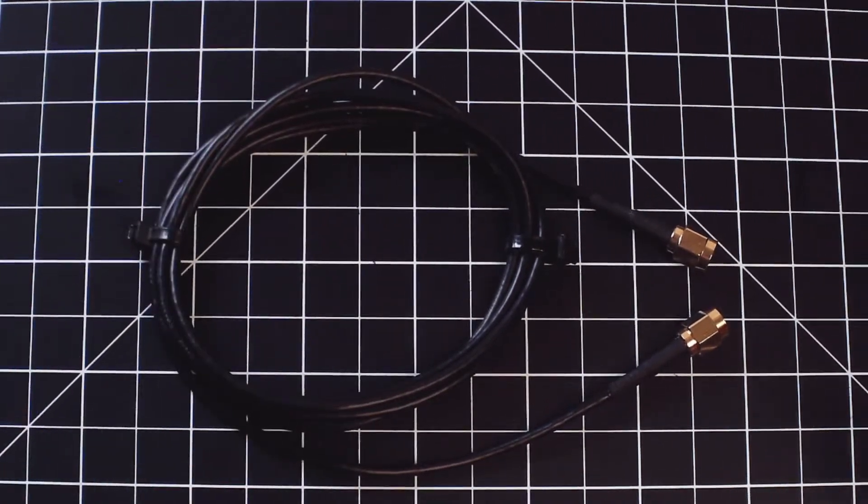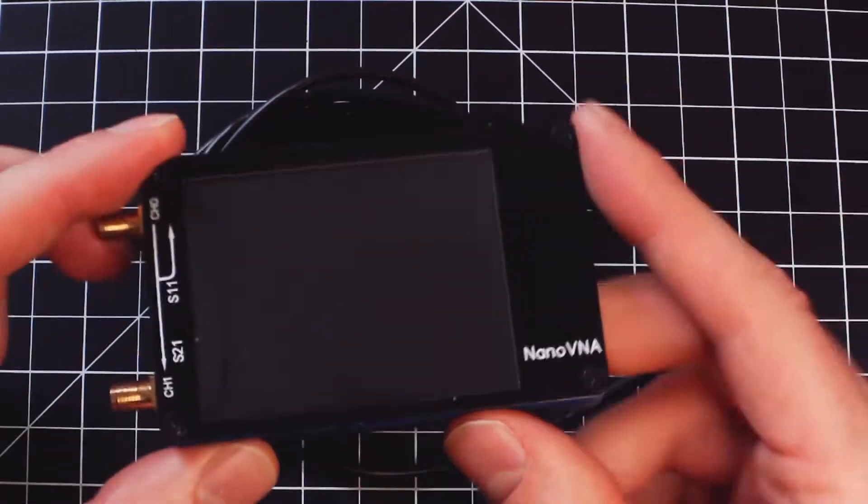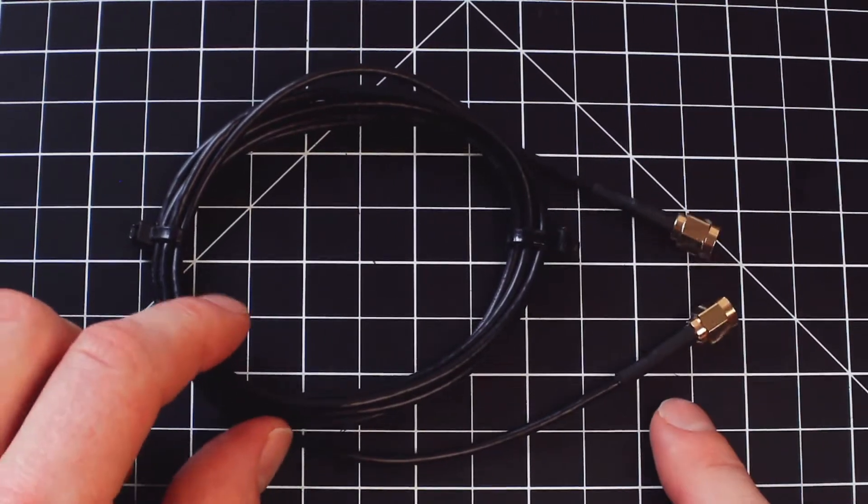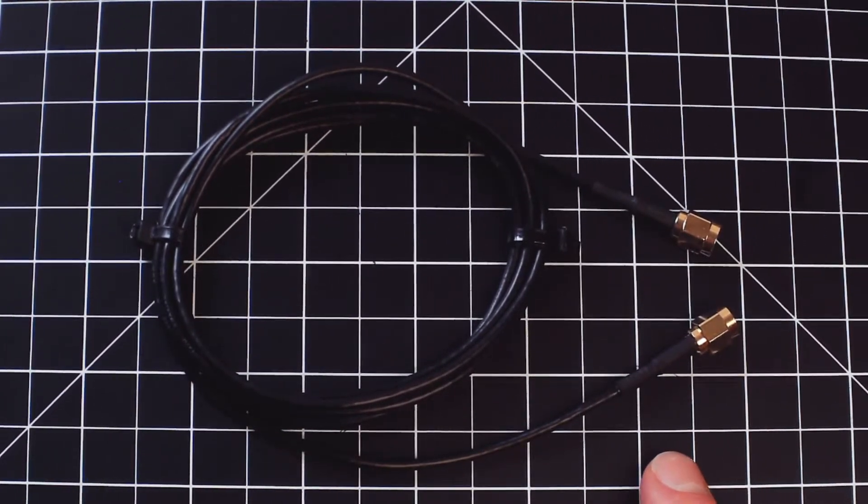So what follows is just going to be a simple tutorial on how to use nothing but a Nano VNA to measure and characterize all of those parameters for this little piece of coaxial cable transmission line.